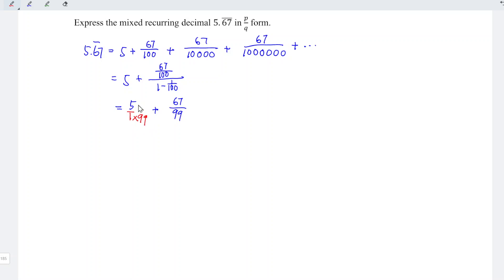So we multiply 99 to the denominator as well as the numerator. So this is equal to 495 over 99 plus 67 over 99, and this is equal to 562 divided by 99. And hence we're done.